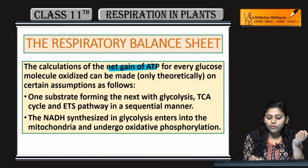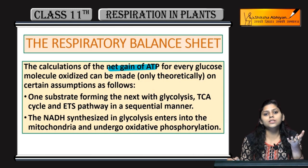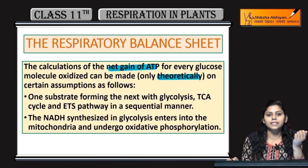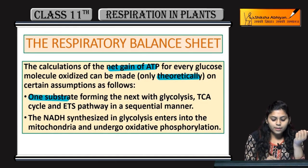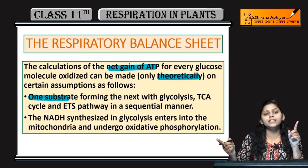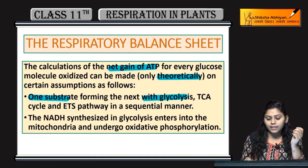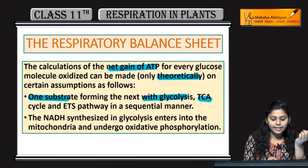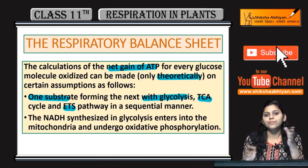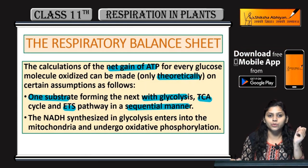Net gain of ATP kitna hua for one glucose molecule? A glucose molecule jab toota, to usse hume kitne ATP molecules mile — yeh sirf hum theoretically dekh sakte hain. One substrate forming the next — substrate molecule se next substrate molecule bana raha, ya phir product bana raha hai, with glycolysis, TCA cycle and ETS pathway. Yeh sab ek sequential manner mein ho raha hai.